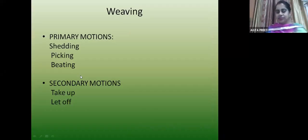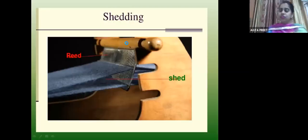Coming to weaving — weaving has three motions: primary, secondary and auxiliary. Primary motions are most important: shedding, picking and beating. Secondary motion includes let-off and take-up. I will be discussing these.